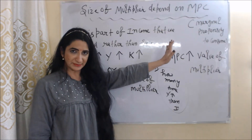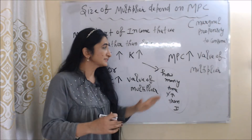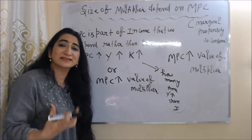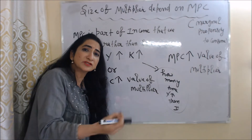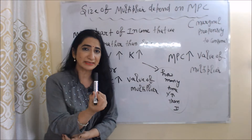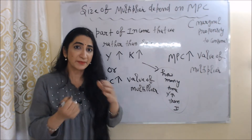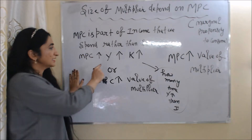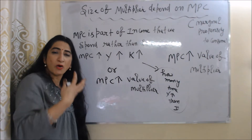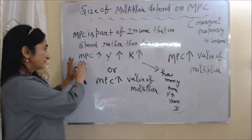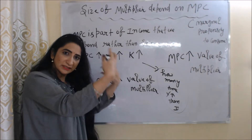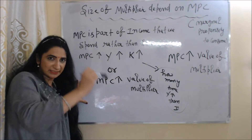Size of the multiplier depends on MPC, or marginal propensity to consume. As MPC increases, the value of the multiplier will also increase, because MPC is the part of income that we spend or consume rather than save. The spending of one person is the income of another person — for example, buying this marker is my spending, but it is income of the shopkeeper. So when MPC of one person increases, income of another person increases, and as income increases, value of the multiplier increases.